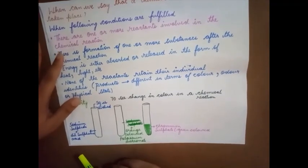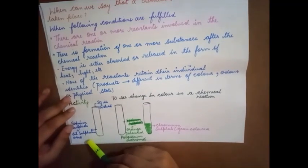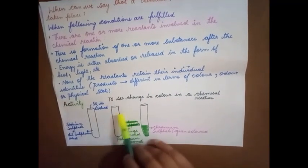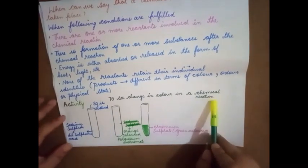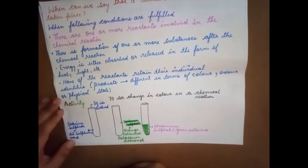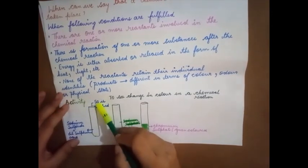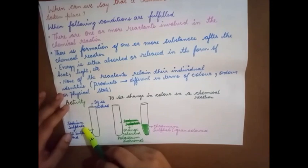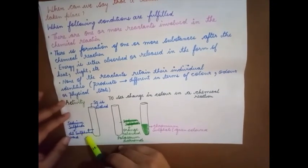Next, let's go through an activity. The main aim of this activity is to observe a change in color during a chemical reaction. Reactants combine to form a product, and one way we know a product is being formed is by a color change.